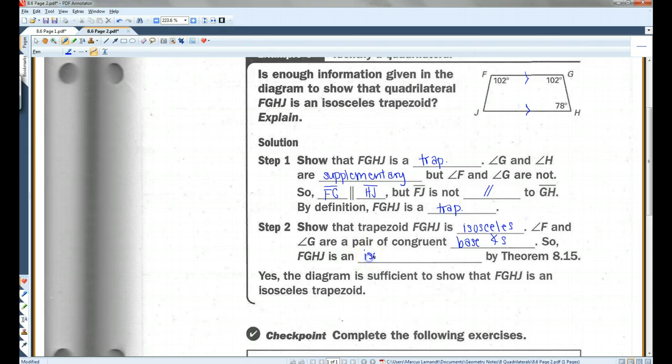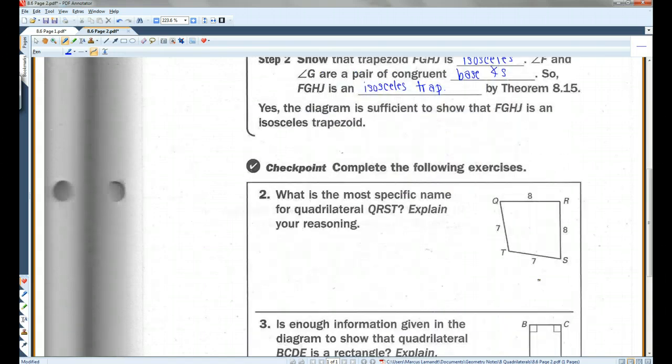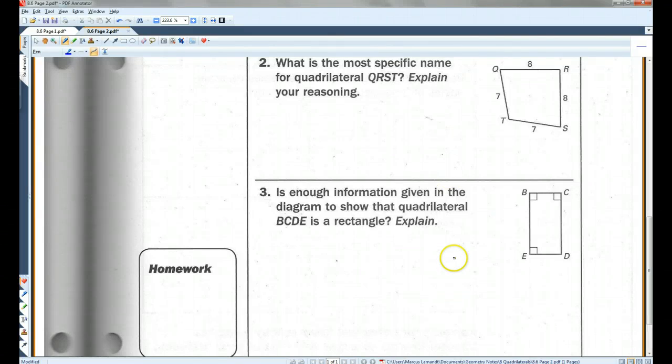So this is an isosceles trapezoid by theorem 8.15. So, yes, the diagram is sufficient to show that FGHJ is an isosceles trapezoid. All right, I'll let you guys do the checkpoint. And this was a really short video. That's all we have.